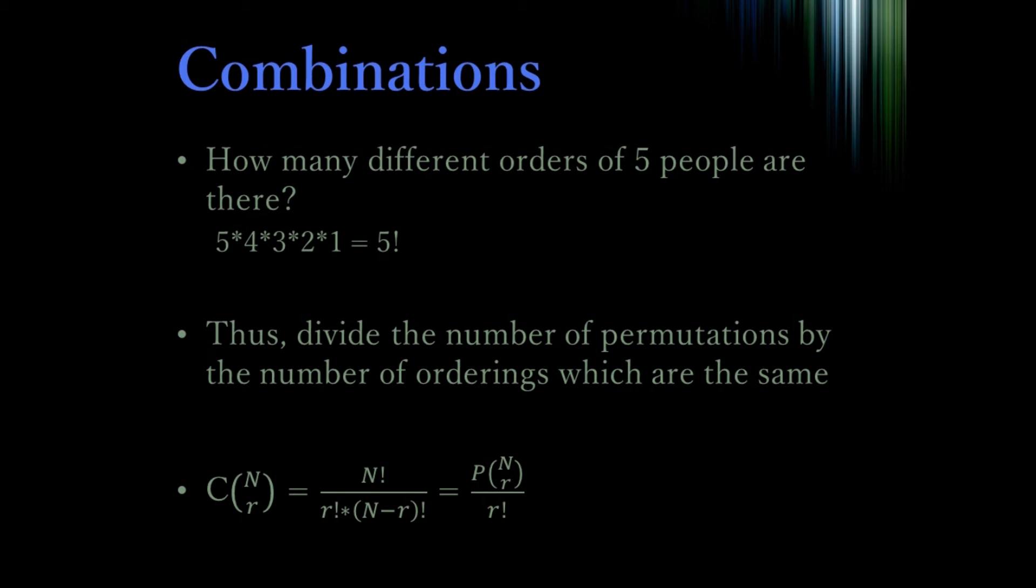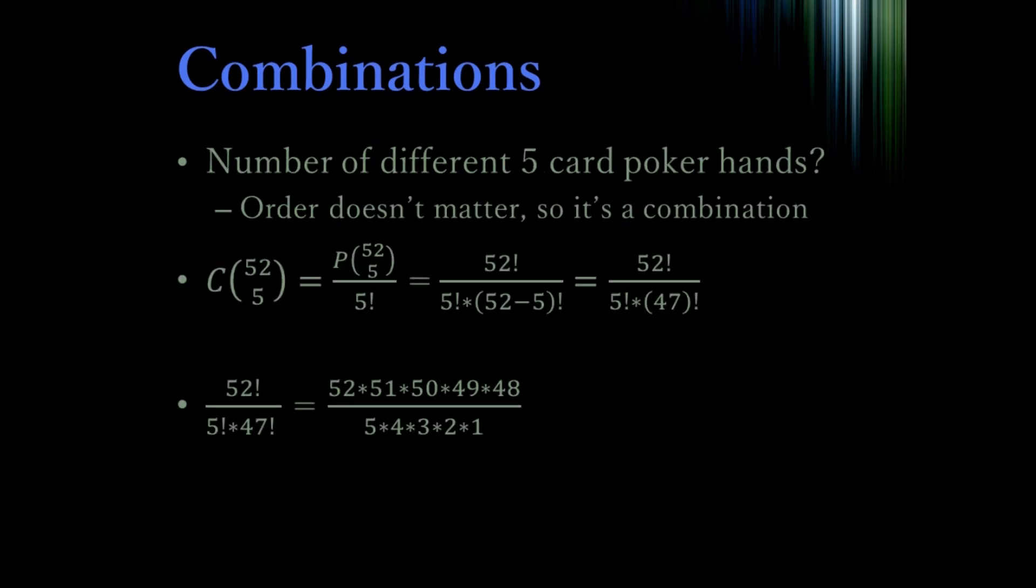So what if instead of 10 costumes, we were talking about having 52 cards, and we wanted to know how many different five card poker hands are there? Since the order doesn't matter in a poker hand, we will use combinations. Here again, we see 52 factorial divided by 5 factorial times 47 factorial, and we cancel out the 47 factorial with part of the 52 factorial to get a nicer number here. And that's combinations and permutations.